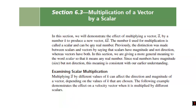Multiplication — finally. But still by scalar. You might reasonably ask why we're not multiplying by a vector. The answer is that multiplying vector by vector is too complex for now, so we're starting with something easier: multiplying by scalar.